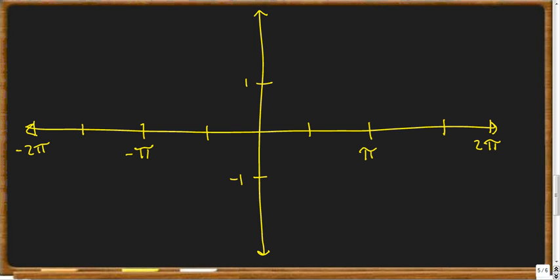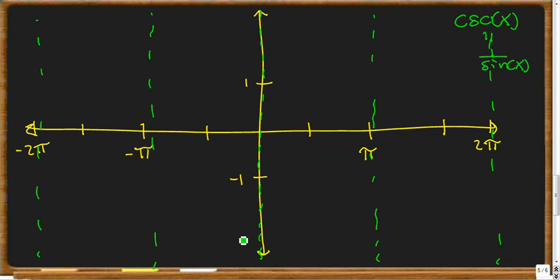Now, our next one is going to be cosecant of x. Cosecant of x is the same as 1 over sine of x. So with 1 over the sine of x, we have to go to the places and make our asymptotes where the sine of x equals 0. Well, the sine of x equals 0 at 0. The sine of x also equals that at π, 2π, at negative π, and at negative 2π.